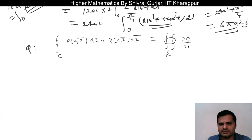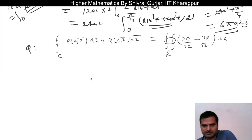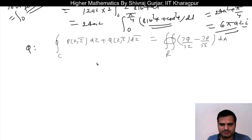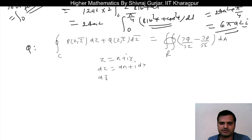We need to show the integral equals the double integral over region R of del Q-bar del z minus del P-bar del z-bar into dA. First, we know that z is x plus i*y, dz is dx plus i*dy, and dz-bar is dx minus i*dy.